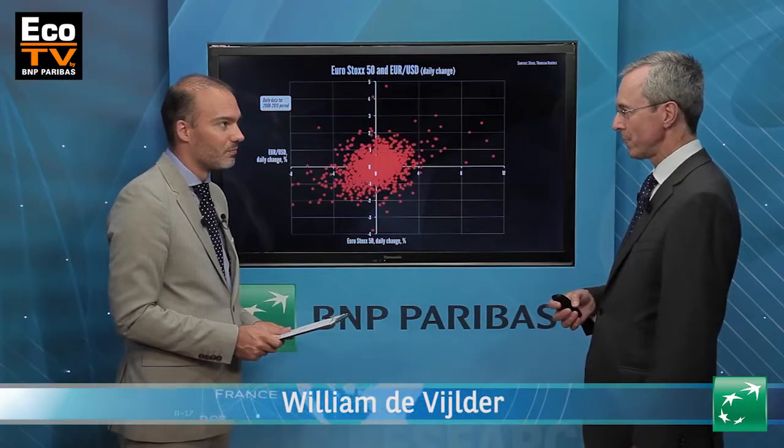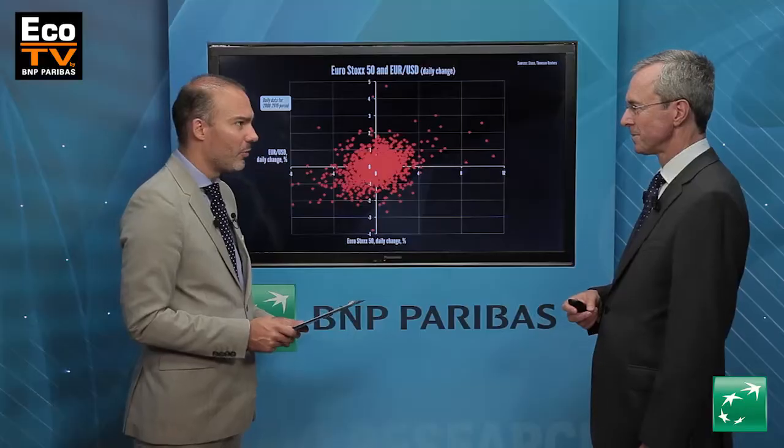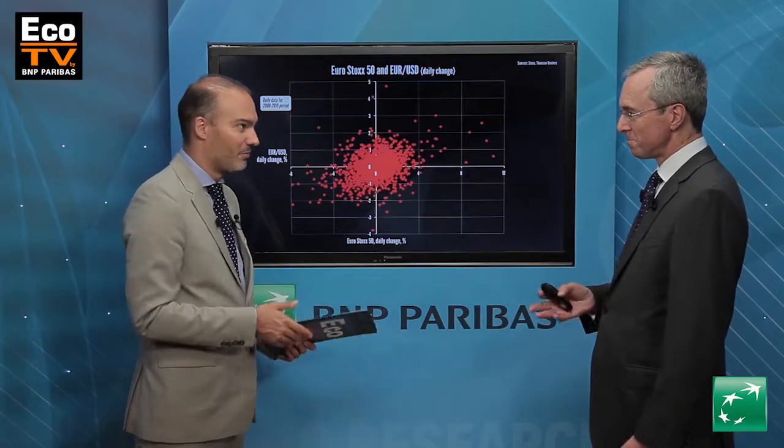We've seen a decline of the stock market in Europe, on the back of the very significant drop in the Chinese stock market. Simultaneously, we have seen a strengthening of the EUR against the dollar. Is that normal to see the strengthening of the EUR when stocks are down?